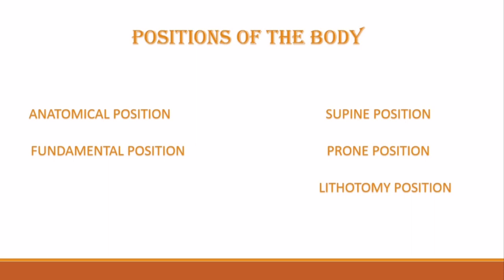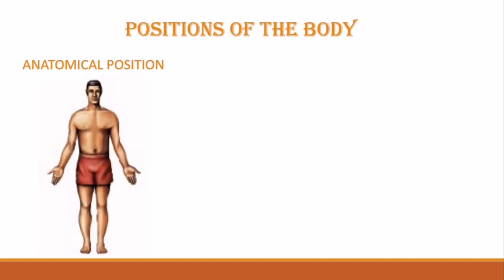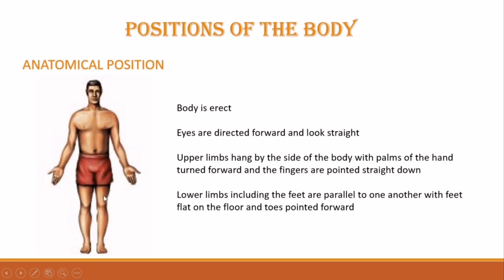First is anatomical position. In anatomical position, the body is erect, the eyes are directed forward and look straight, the upper limbs hang by the side of the body with palms of the hand turned forward. The palms should be turned forward and fingers pointed straight down. The lower limbs including the feet are parallel to one another, with feet flat on the floor and toes pointing forwards.